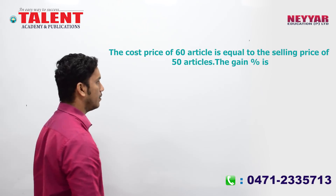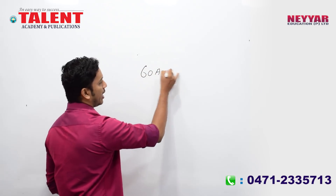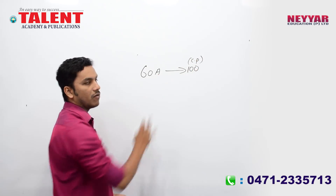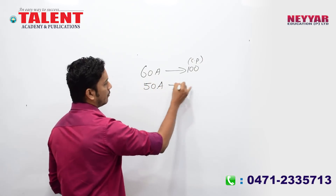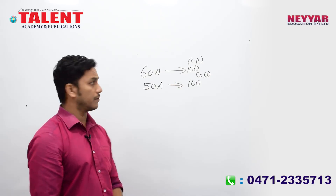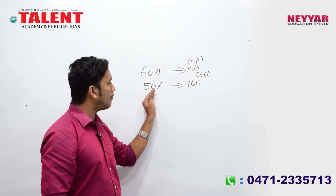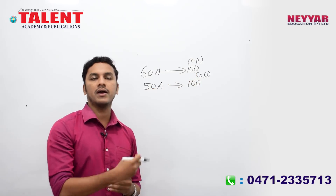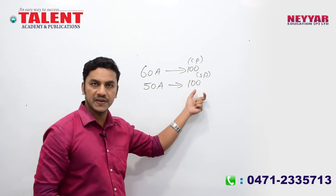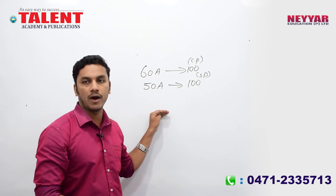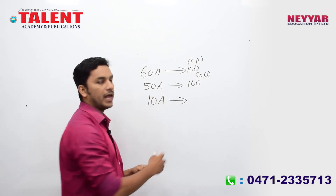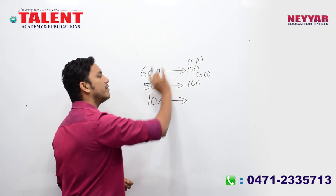The gain percentage is — 16 articles cost price equals the selling price of 50 articles. I considered 100 articles. This is my initial count. 10 articles are gone. What is the profit percentage? That is 60 and 100.